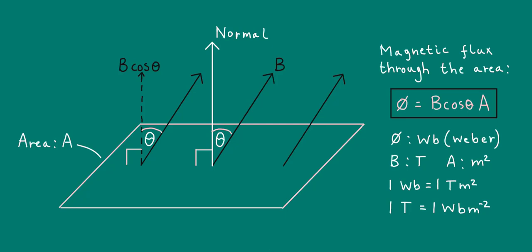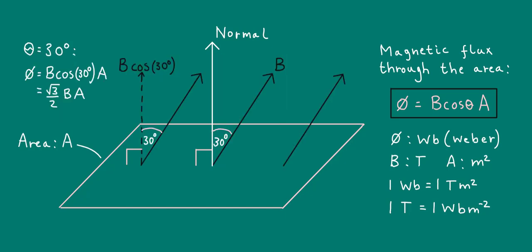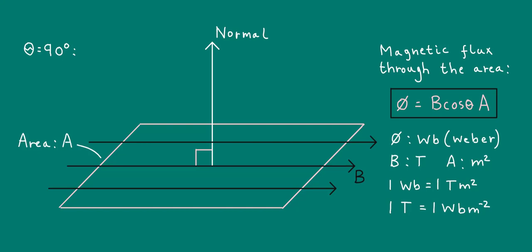When theta is equal to zero, i.e. the field lines are parallel to the normal, the magnetic flux through the area is just equal to B times A, because cosine of zero is equal to one. When theta is equal to 30 degrees, the magnetic flux is equal to square root of 3 over 2 times BA. A special case is when theta is equal to 90 degrees, in which case the field lines are directed in the plane of the area. And so the flux through the area is equal to zero. In this case, the magnetic field lines have zero component parallel to the normal. So cosine of 90 is equal to zero, and that's why the flux is equal to zero here.